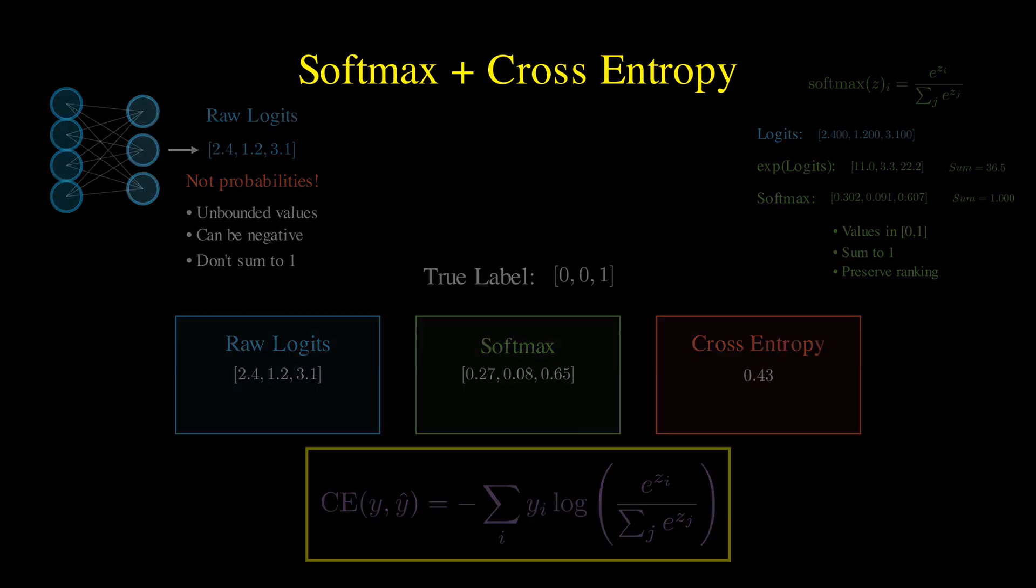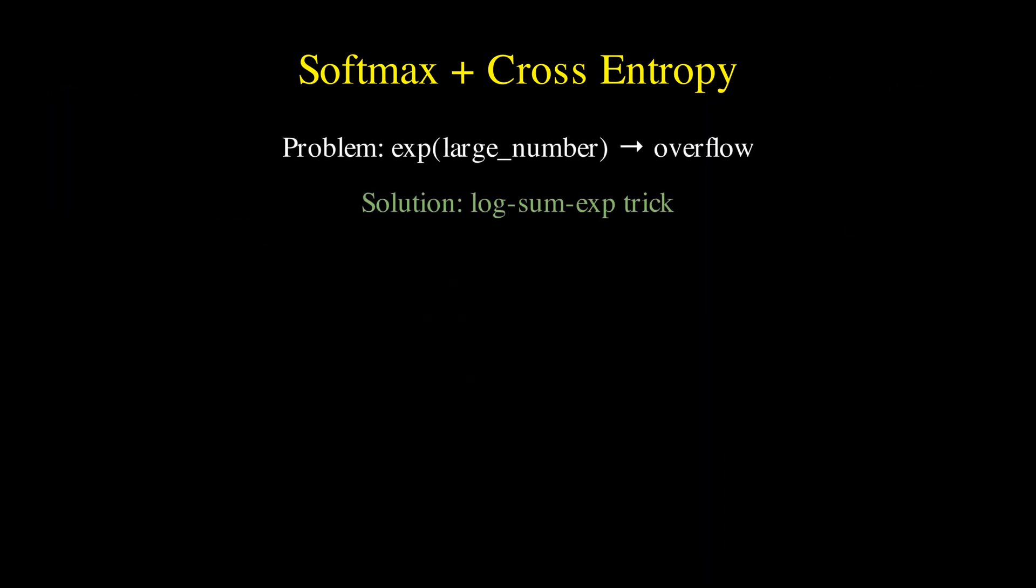One implementation detail worth noting is that for large logit values, the direct computation can cause numerical overflow because exponentials grow fast. We address this with the log-sum-exp trick, which rewrites the softmax function as depicted here.